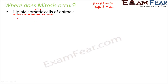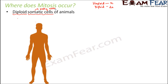Animals have two types of cells: body cells (somatic cells) and specialized sex cells or gametes. The body cells are all diploid whereas the specialized sex cells are haploid. In human beings, there are 46 chromosomes or 23 pairs. Out of that, 22 pairs are somatic cells which are diploid, whereas one pair is the specialized sex cells which are haploid. Mitosis occurs in diploid somatic cells of animals — all cells except the sex cells are diploid.